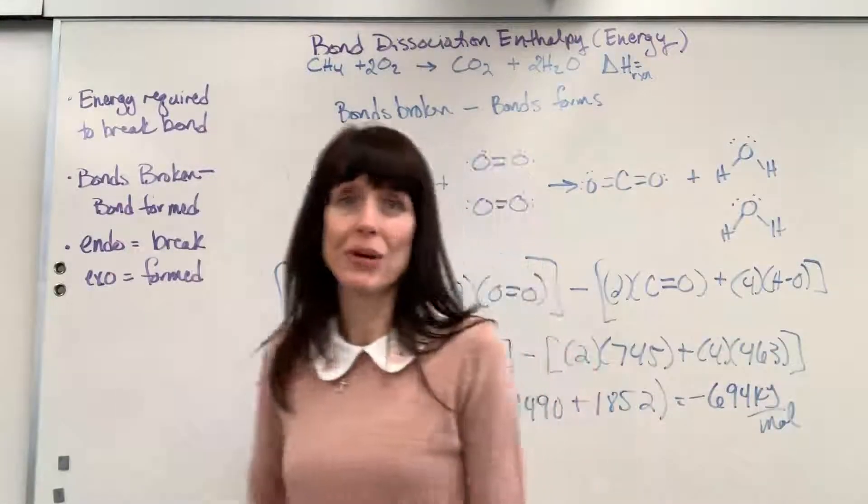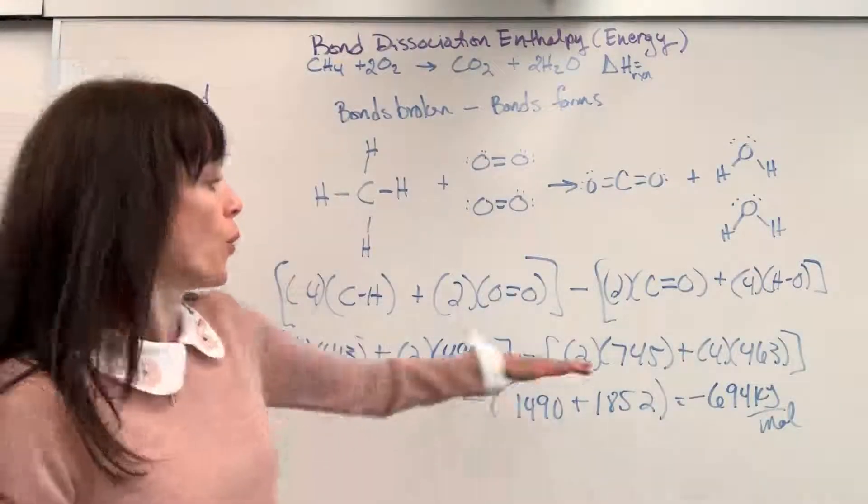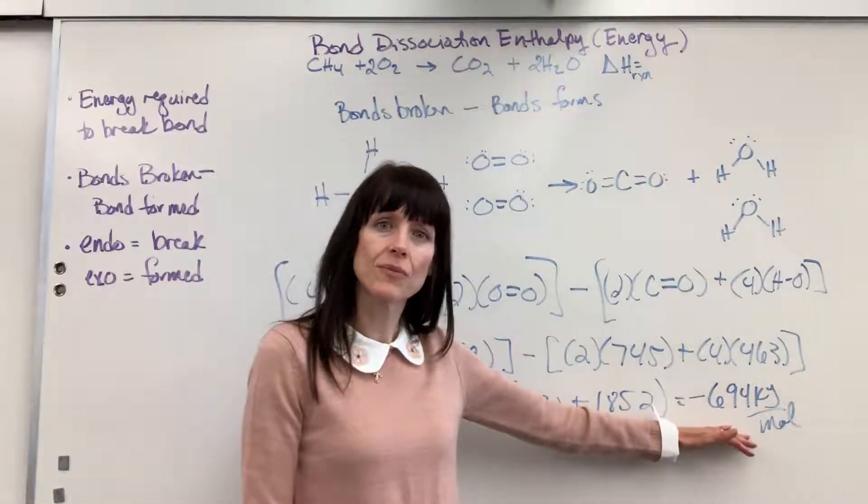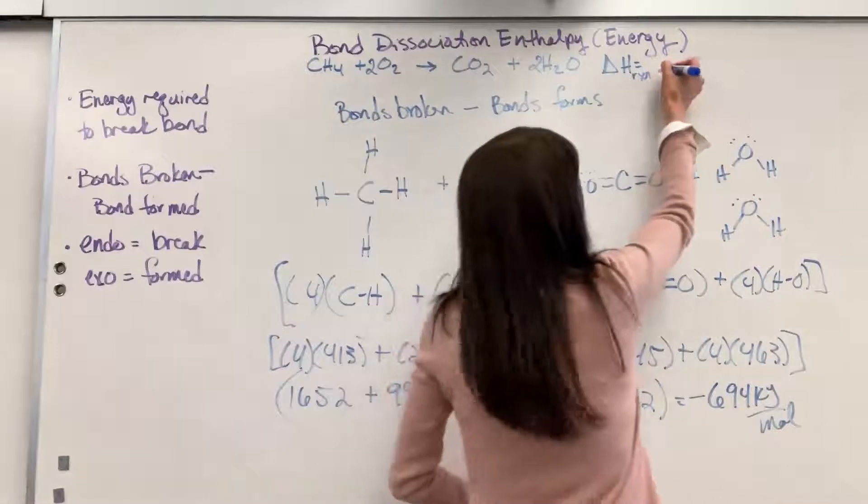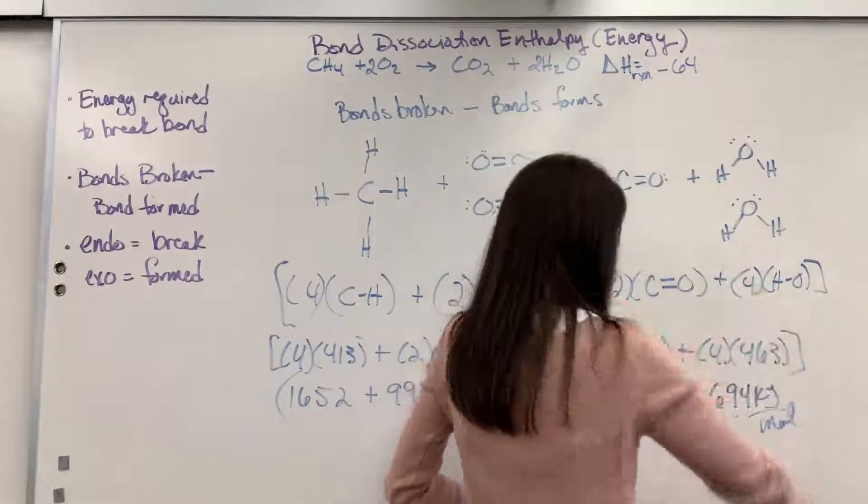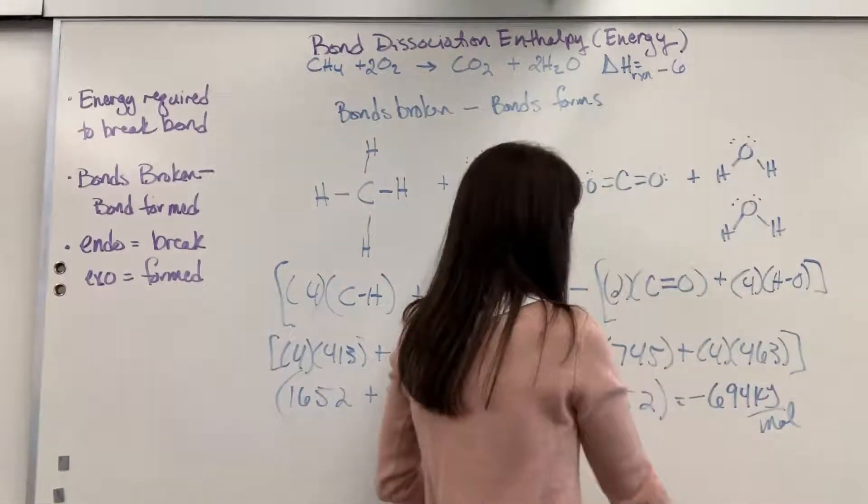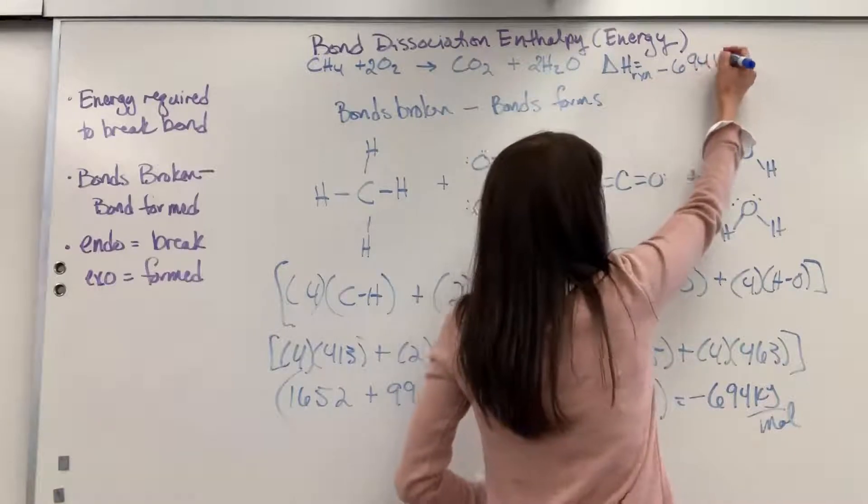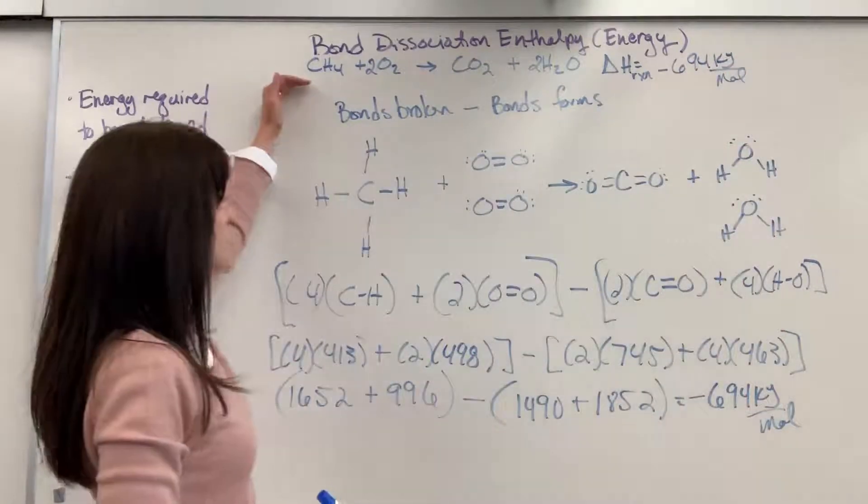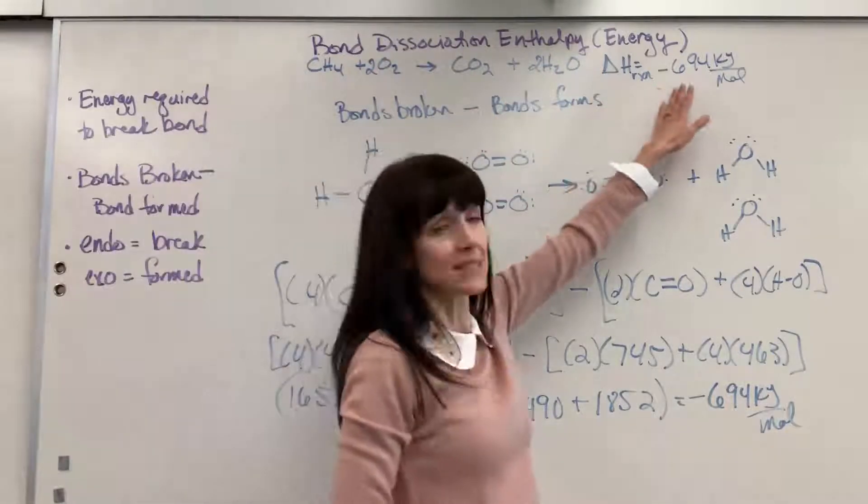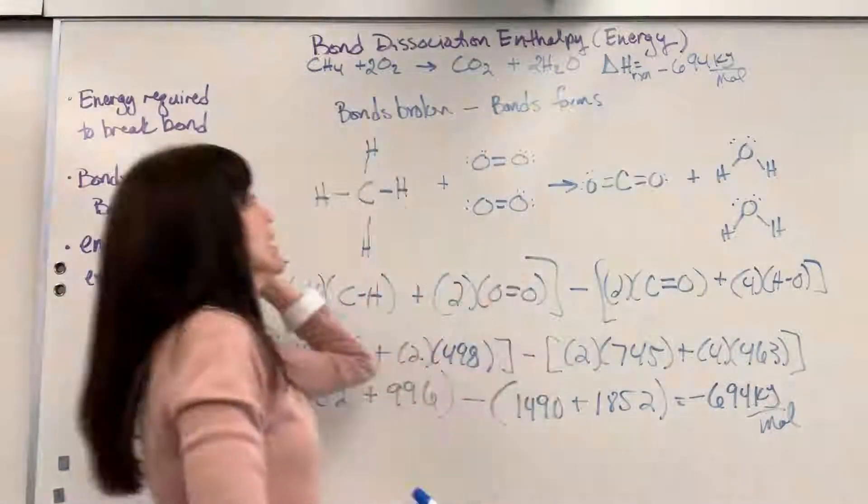So here's always the big question. What did we find? What does that represent? That's our delta H. Negative 694 kilojoules per mole. When we combust one mole of methane, it releases 694 kilojoules.